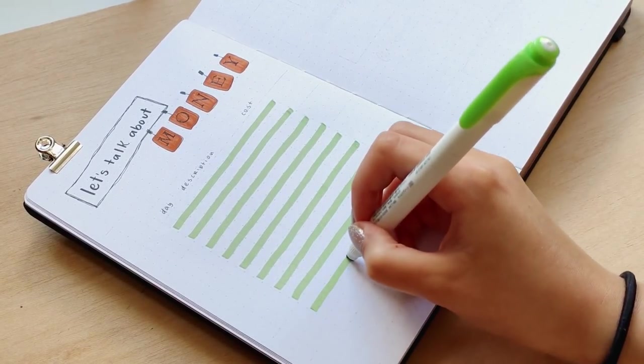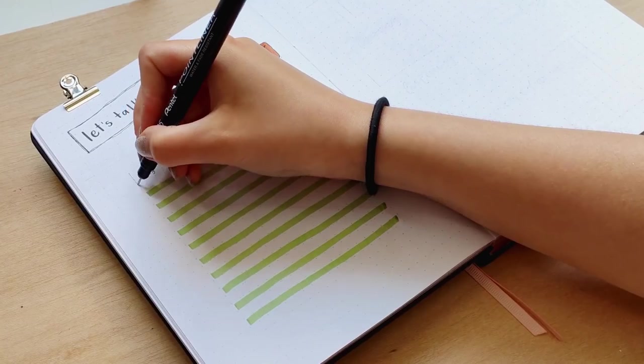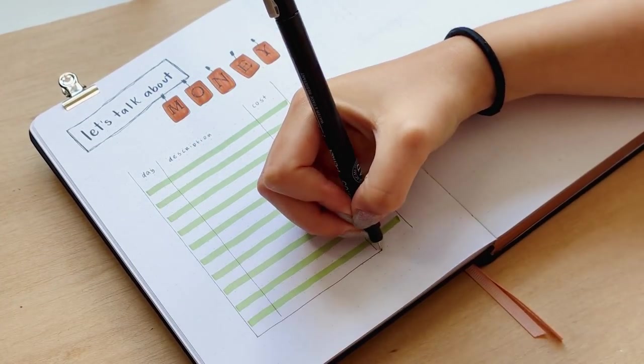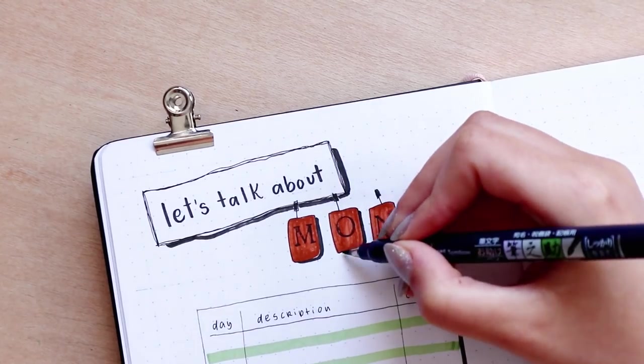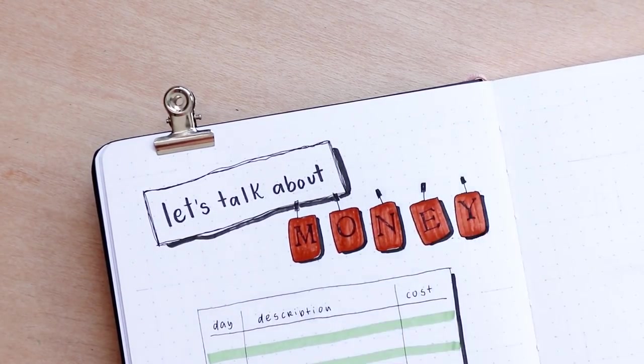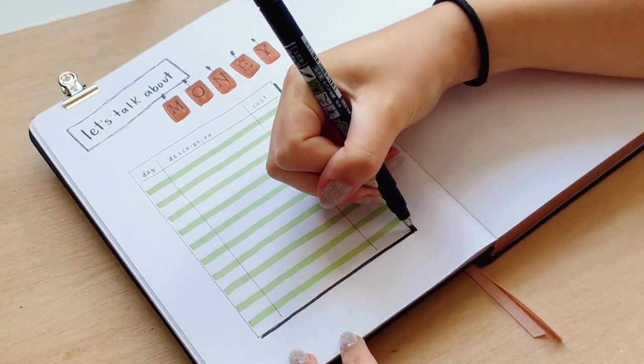For the tracker, I did a column for the day, another for the description, and another for the amount. Then I highlighted every other line with the grid zebra mildliner on the tracker to make it more interesting.